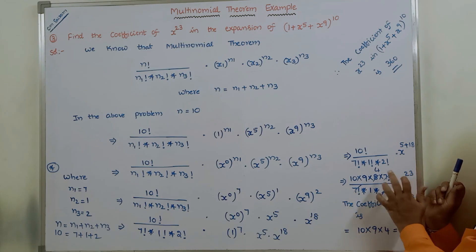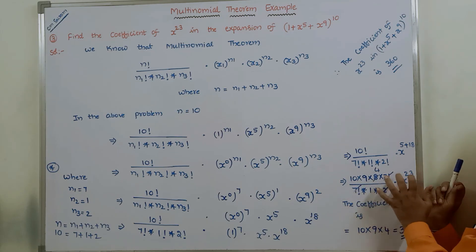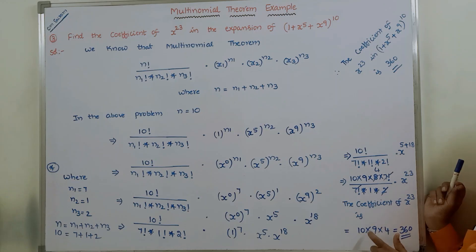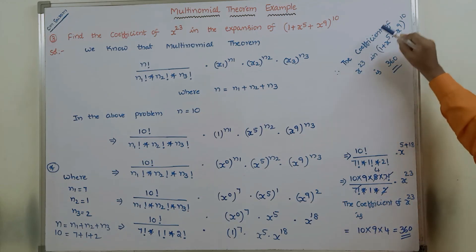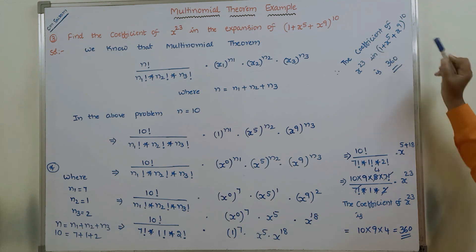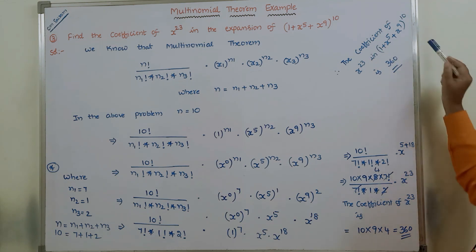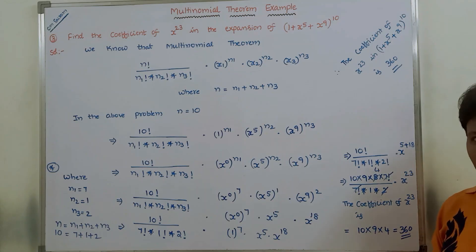Therefore, the coefficient of x power 23 in (1 plus x power 5 plus x power 9) whole power 10 is 360.